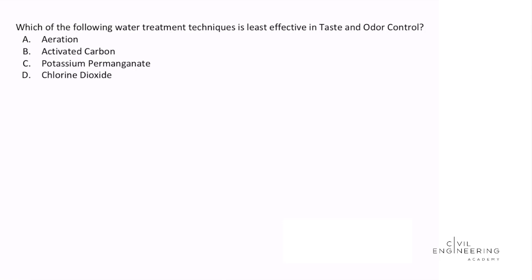The question asks: which of the following water treatment techniques is least effective in taste and odor control? A, aeration. B, activated carbon. C, potassium permanganate. Or D, chlorine dioxide.